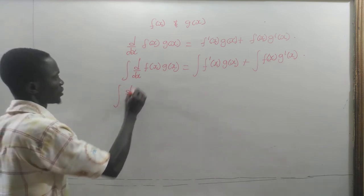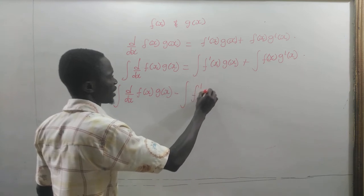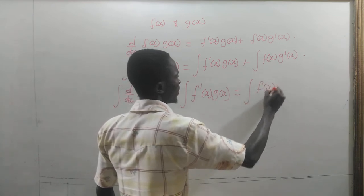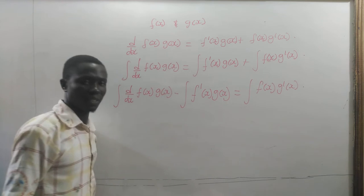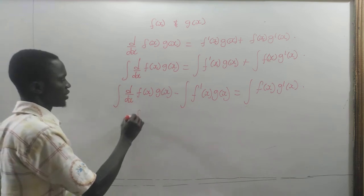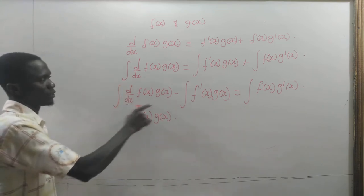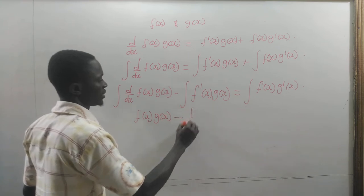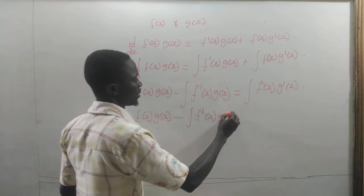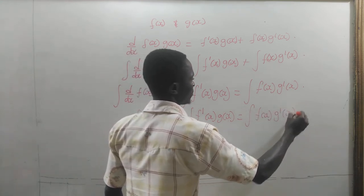Now let us rearrange. The integral of f of x times g prime of x: if we integrate the left side, we are going to have f of x times g of x because the derivative sign will go away. So we get f of x times g of x minus the integral of f prime of x times g of x.